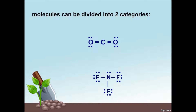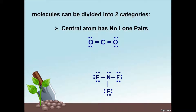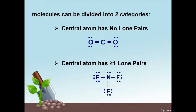Molecules can be divided into two categories. First, the central atom which has no lone pairs — for example, the carbon dioxide molecule. And second, the central atom has one or more lone pairs — for example, NF3, which has the molecular geometry trigonal pyramidal.